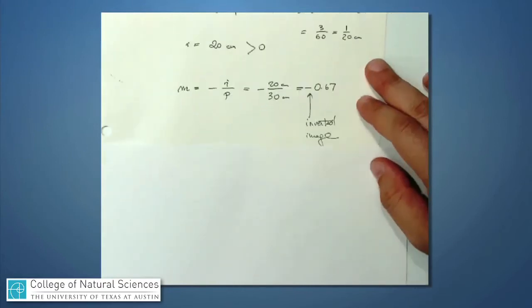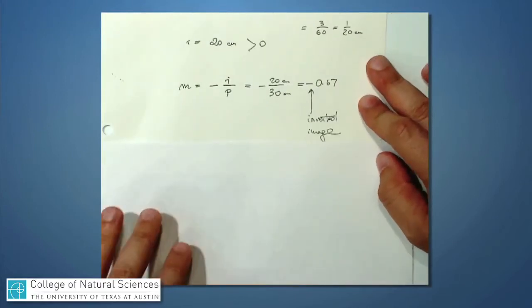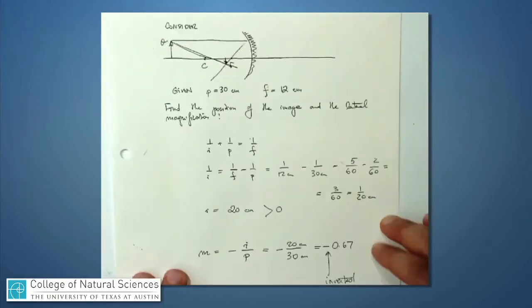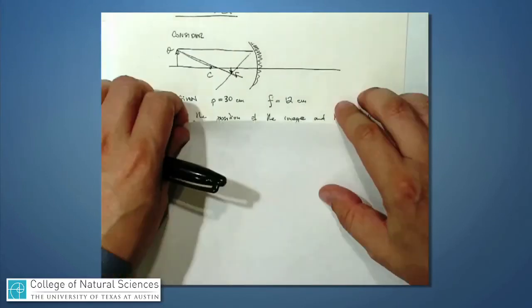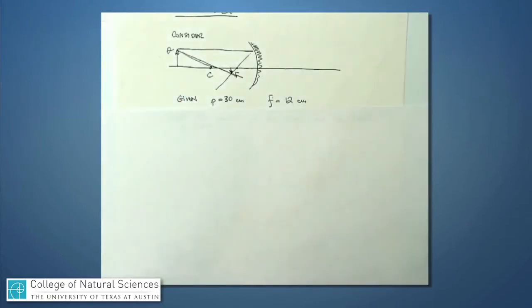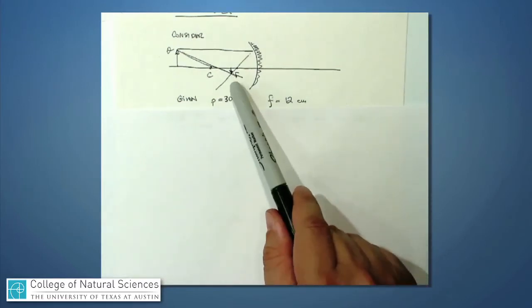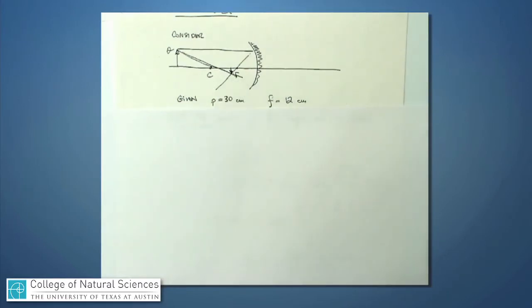That means, because it's a negative number, it's an inverted image. And when I think about drawing this, I've more or less got this right now. I've drawn an image right there, which is inverted. It's upside down relative to the original object. And it's smaller than the original object.